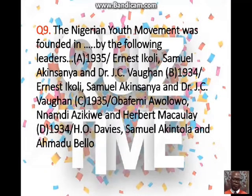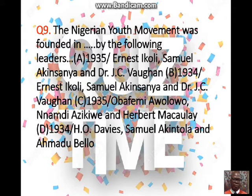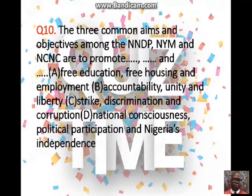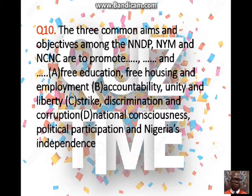Question nine: the Nigerian Youth Movement was founded by the following leaders. A. 1935 by Ernest Ikoli, Samuel Akinsanya and Dr. J.C. Vaughan; B. 1934 by Ernest Ikoli, Samuel Akinsanya and Dr. J.C. Vaughan; C. 1935 by Obafemi Awolowo, Nnamdi Azikiwe and Herbert Macaulay; D. 1934 by H.O. Davis, Samuel Akinsanya and Dr. J.C. Vaughan. Question ten: the three common aims and objectives among the NNDP, NYM and NCNC are to promote dash, dash and dash. A. Free education, free housing and employment; B. Accountability, unity and liberty; C. Strike, discrimination and corruption; D. National consciousness, political participation and Nigerian independence.